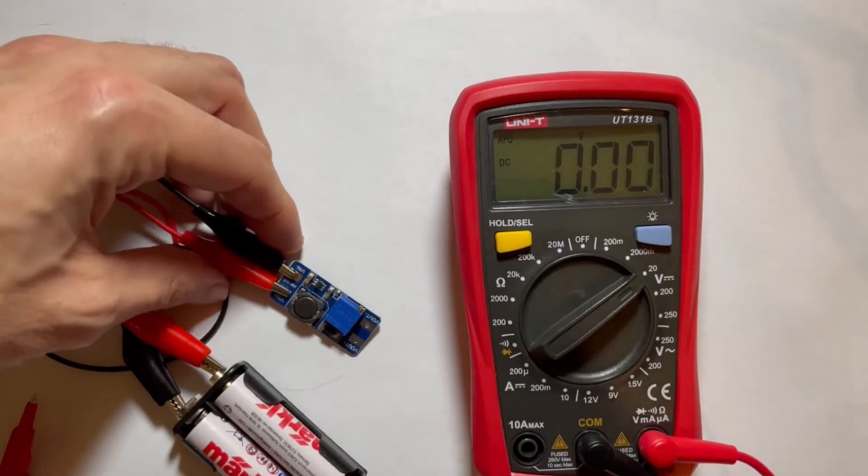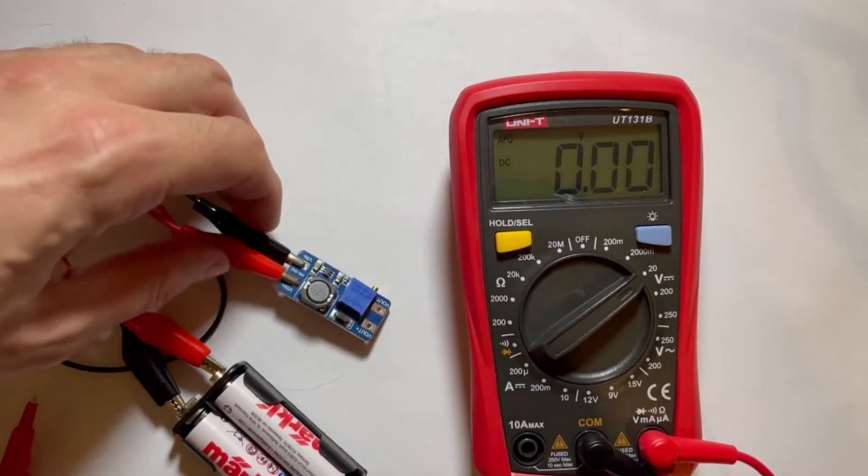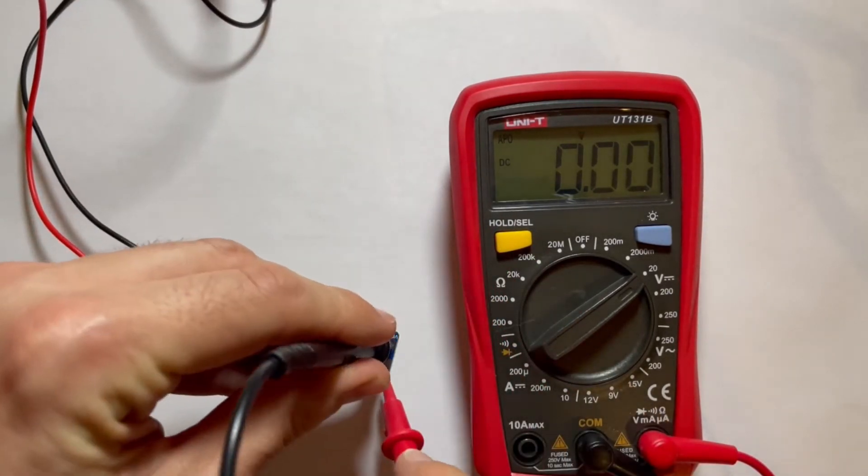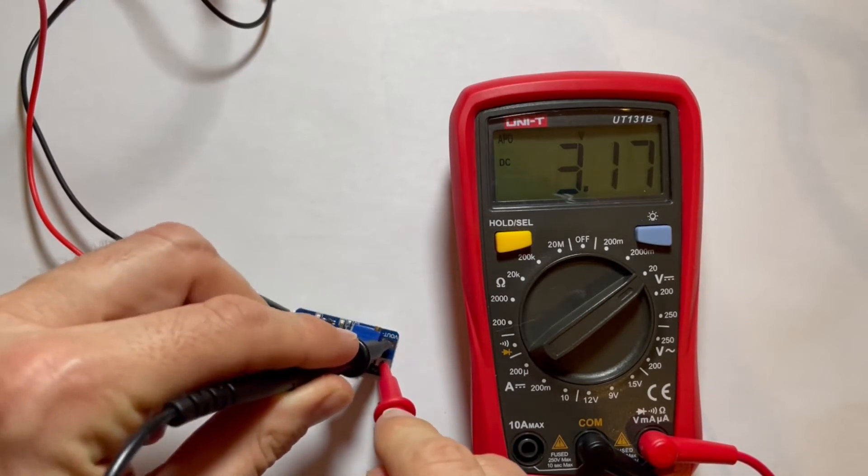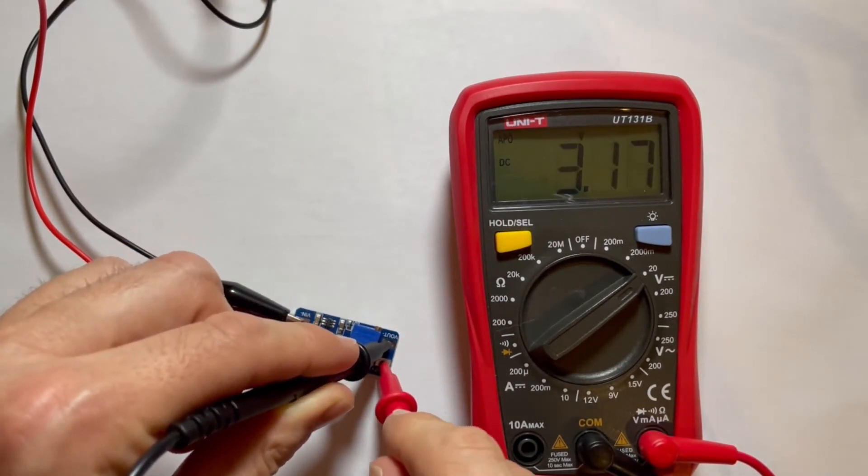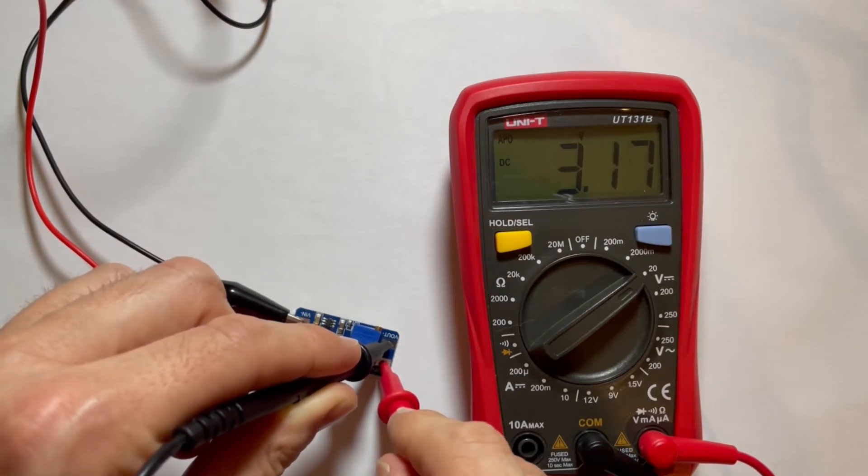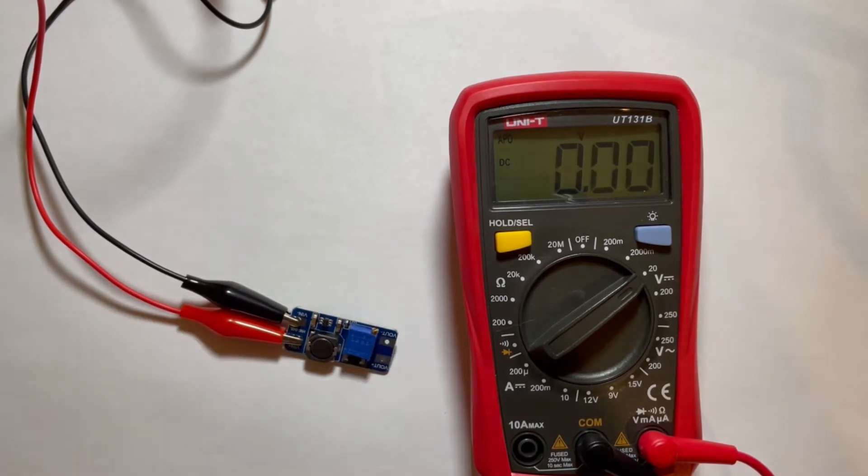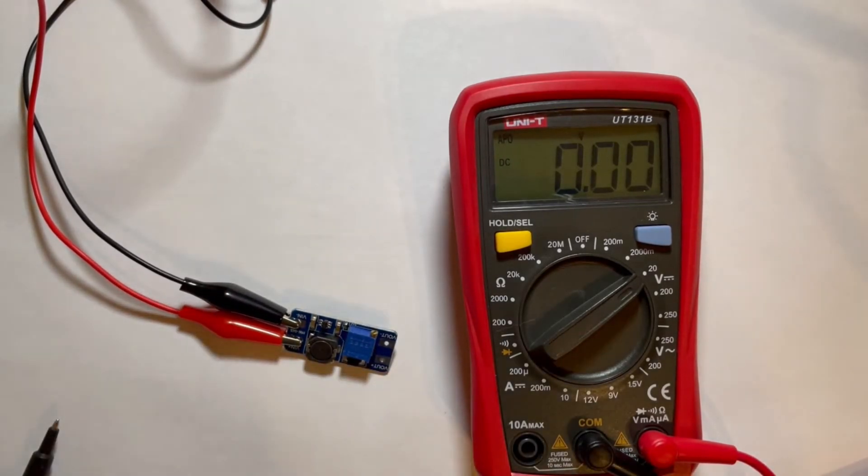So while you are watching me having a little trouble putting the thing on the desk, let's measure the voltage. And the output voltage is around 3 volt also. So we've got input voltage of 3 volt and output voltage of 3 volt. The MT3608 does nothing at the moment.